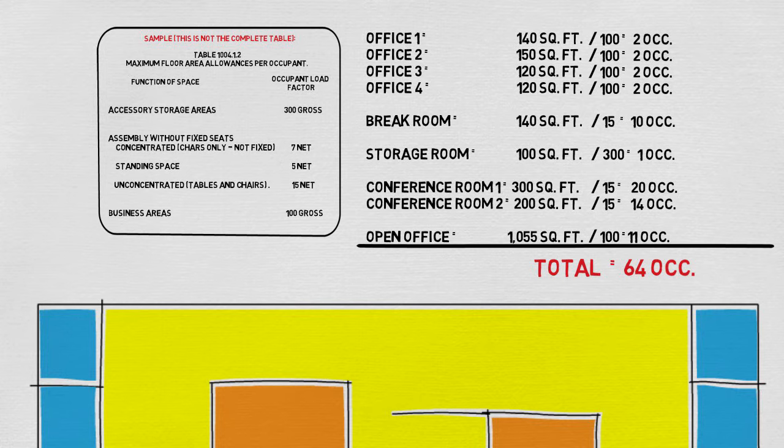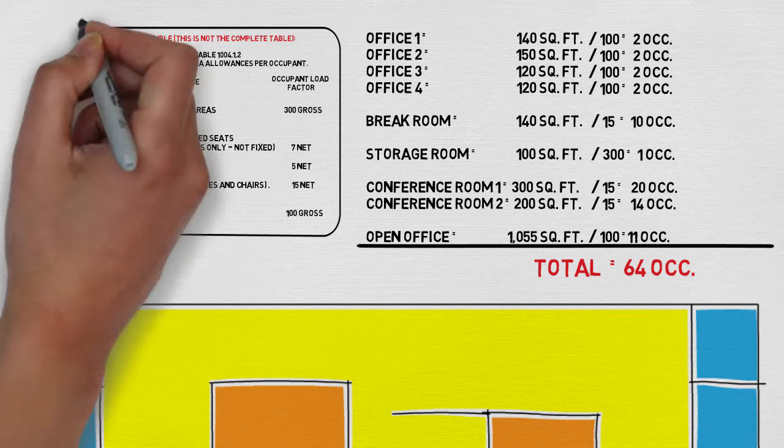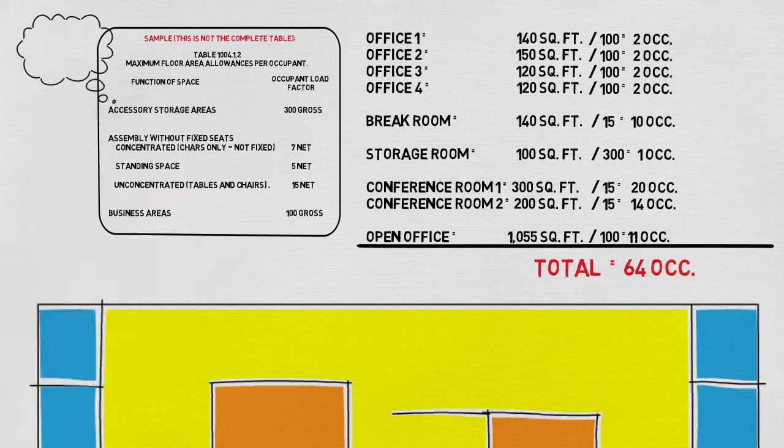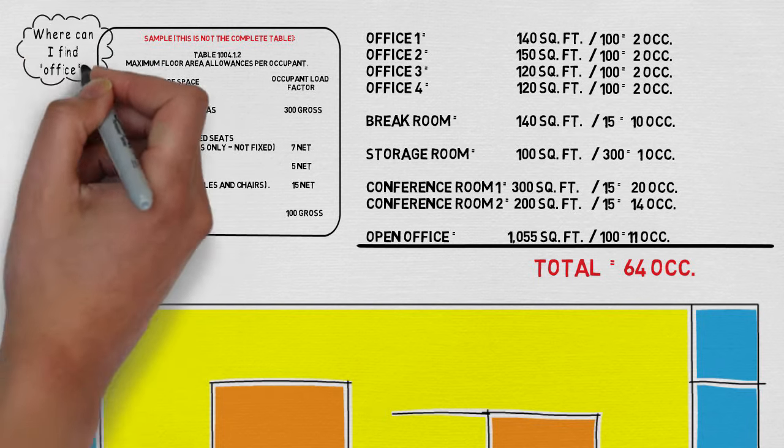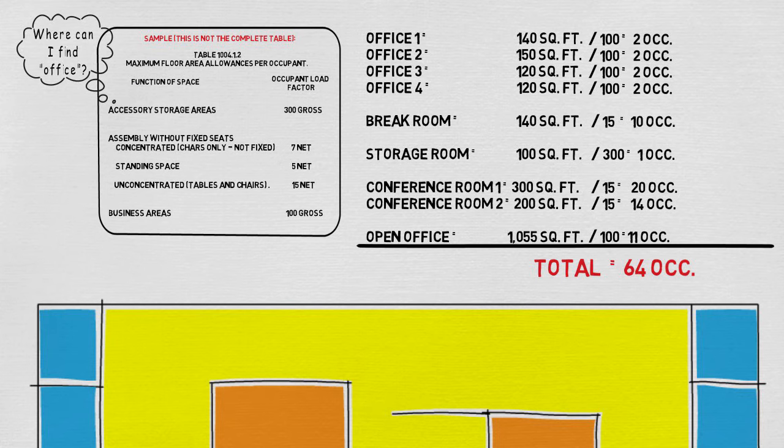As I mentioned earlier, some of these areas are not specifically named in the table in the IBC. Let's take a look. The offices for example, you're not going to find a category called quote-unquote office. Instead if you look at the table you'll find a category called business area. And this will let you know that it's one occupant per hundred square feet.